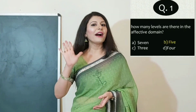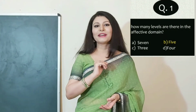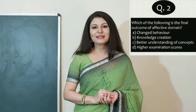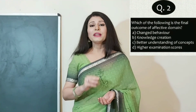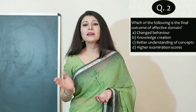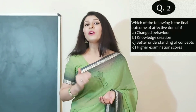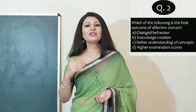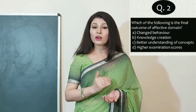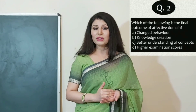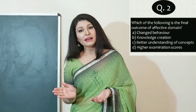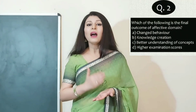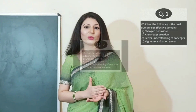The answer is B — there are 5 levels of learning in the affective domain. Question 2: Which of the following is the final outcome of the affective domain? A) Changed behavior, B) Knowledge creation, C) Better understanding of concepts, or D) Higher examination scores.